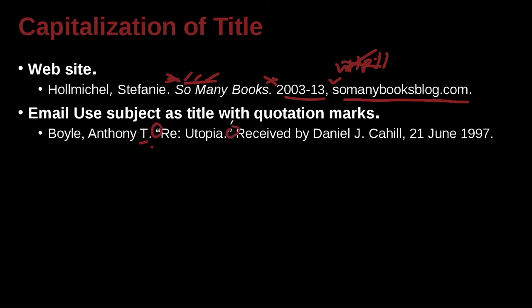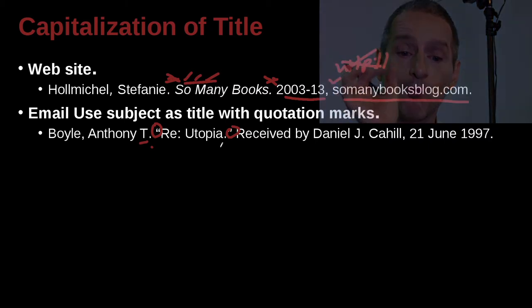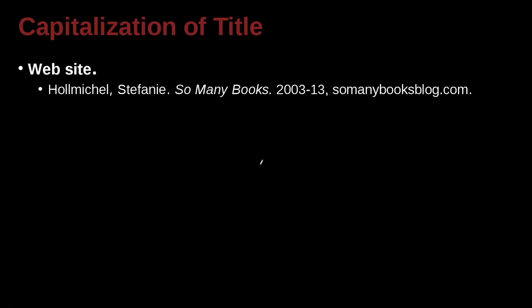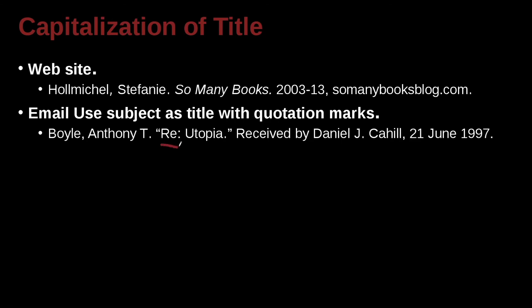What does the quotation mark tell us? Remember, a quotation mark is telling us this is a piece of something bigger — this is one email. So this email, how do we give it a name? Well, we use the subject line. The subject name of this email was Reutopia. And then we specify: received by Daniel J. Cahill. So this is the person who received it. If this is me and I received it, then this would be my name, comma, when did you receive it? 21 June. So it's the day, and the month, and the year. And there's no commas in there at all.